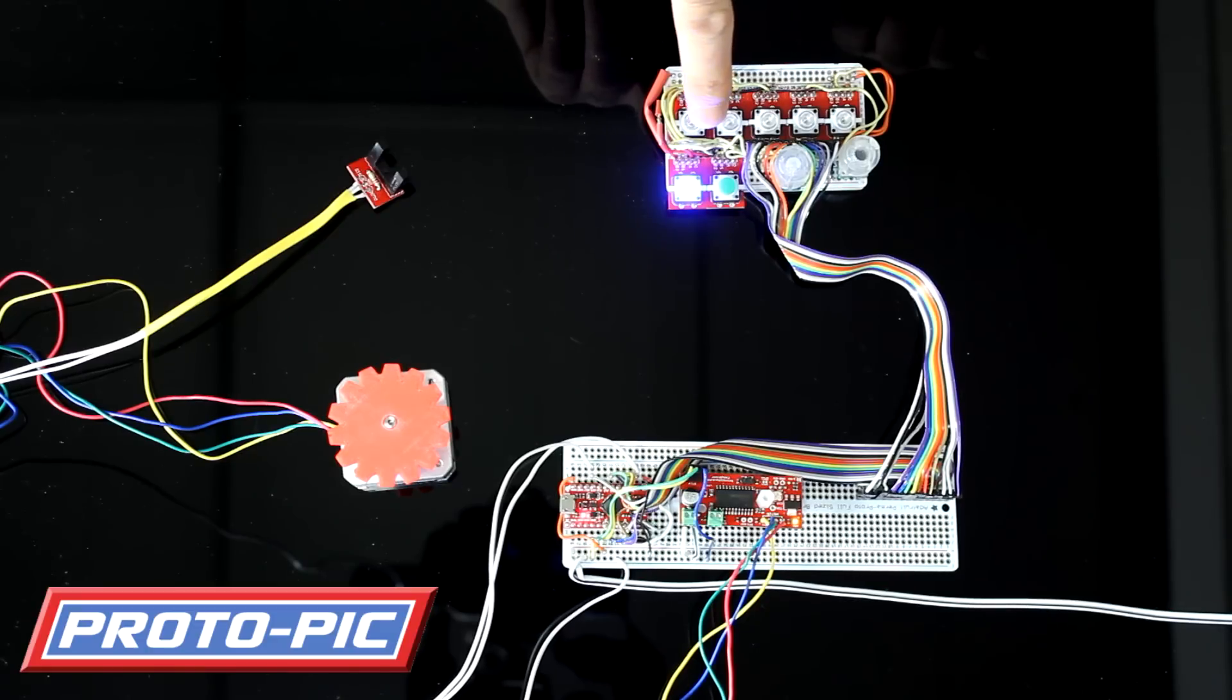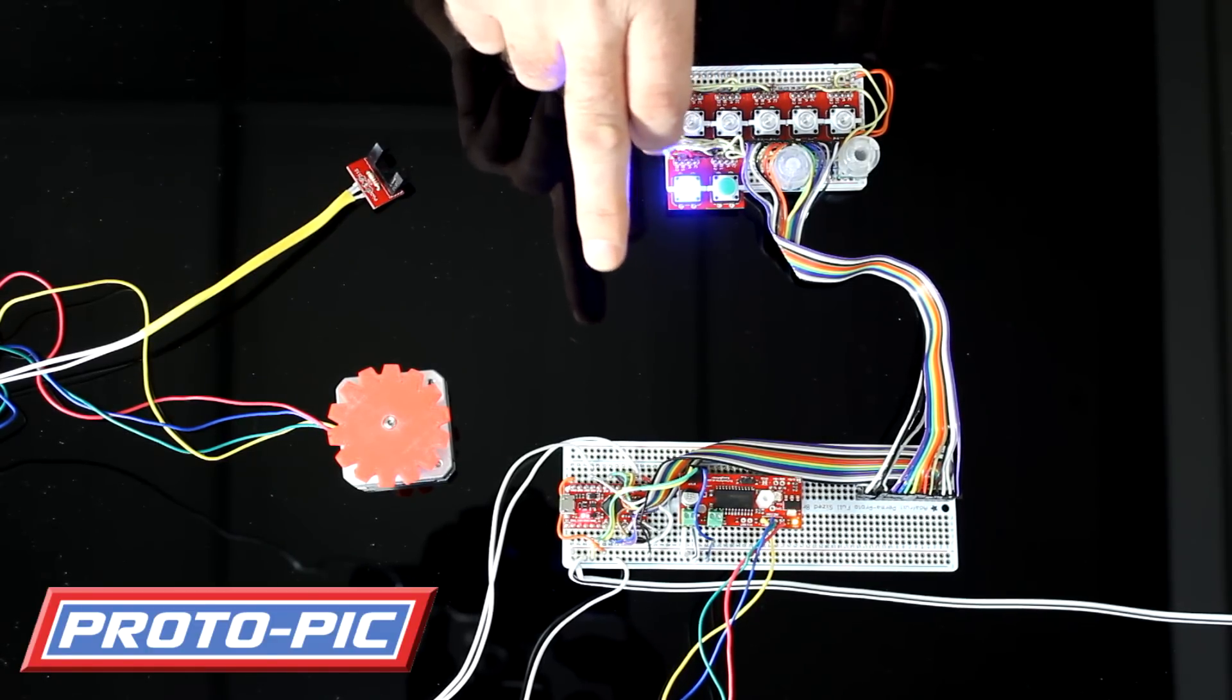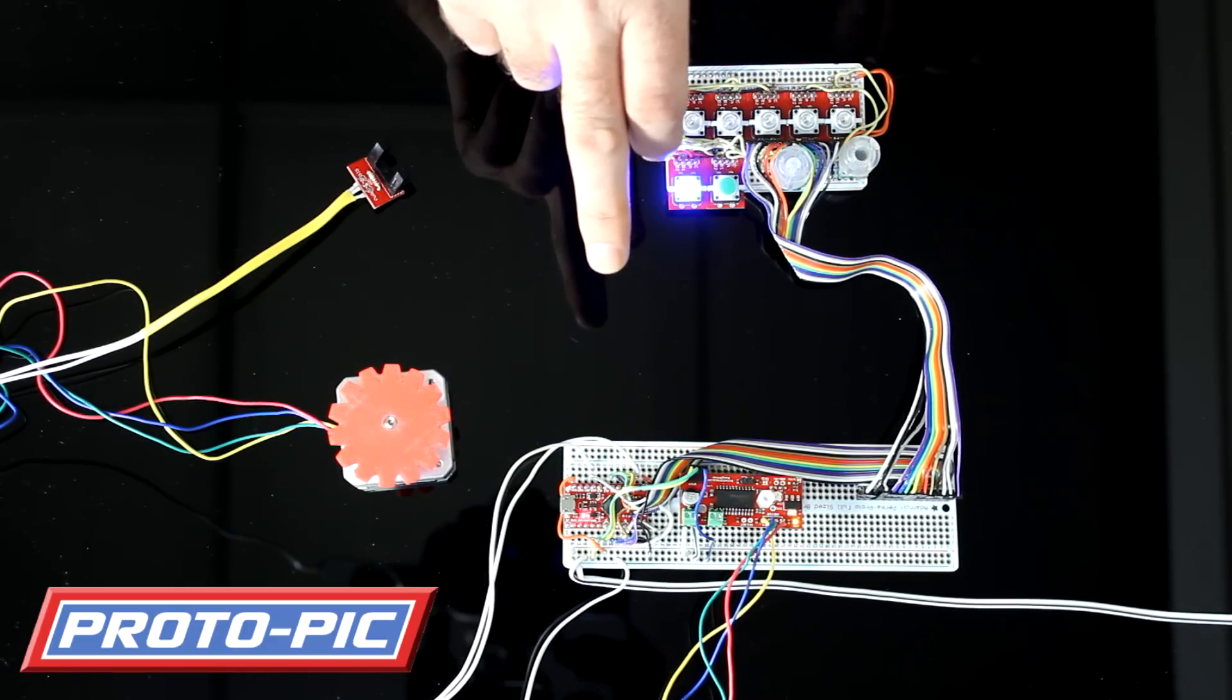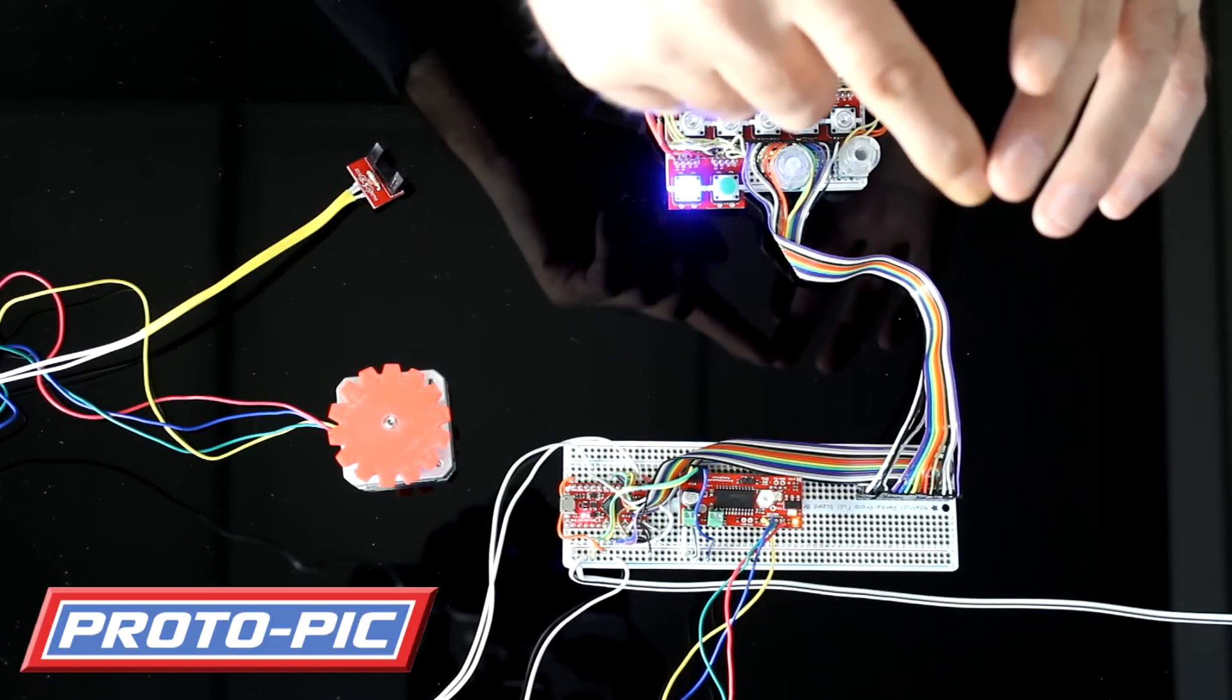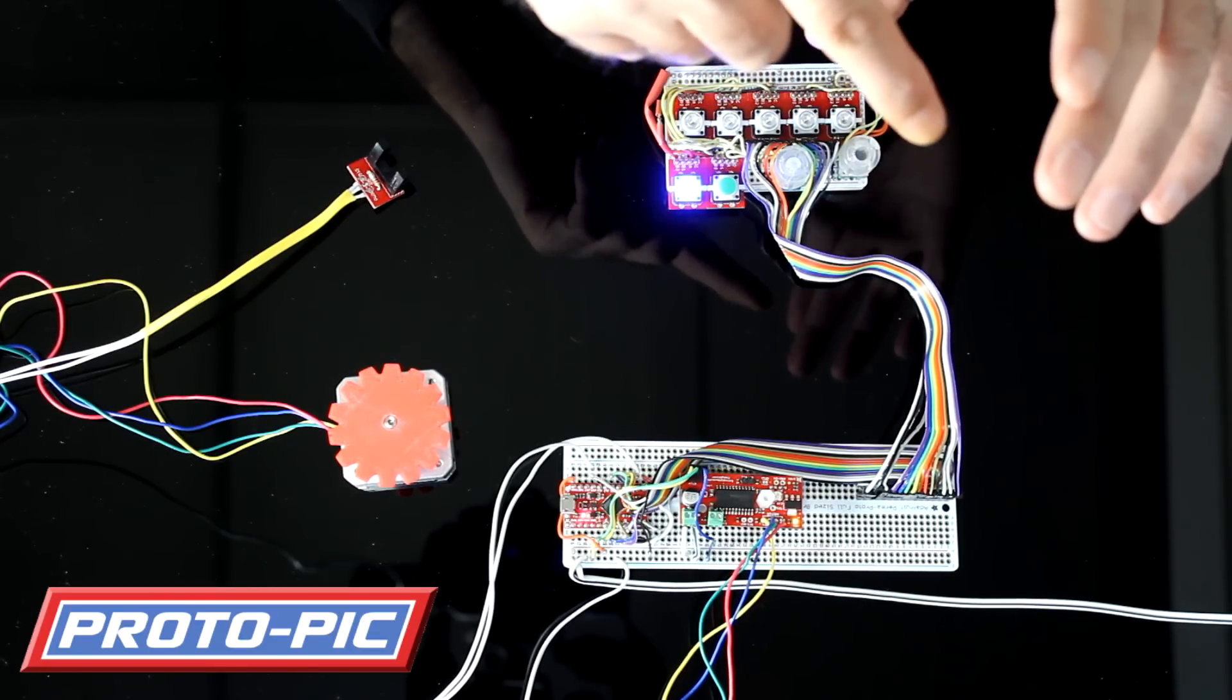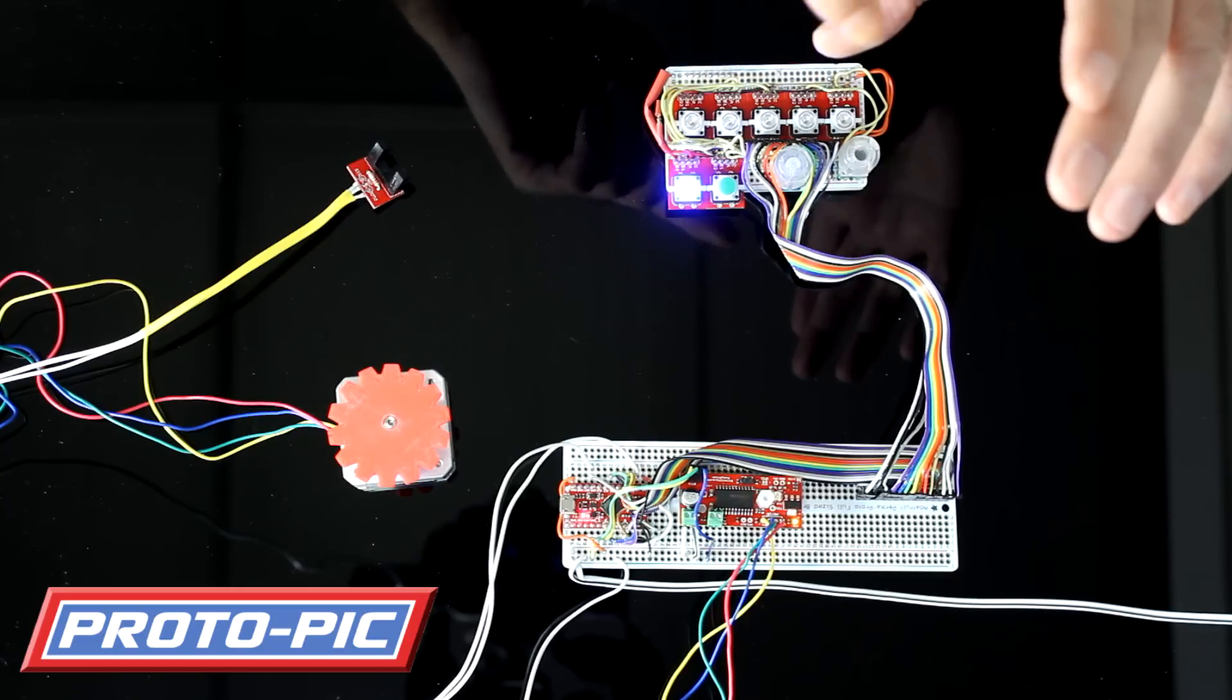So what we've done is using one analog input port we've created a resistor ladder network so what you can do with that you've got five volts you've got ground and you've got I think we used 10k resistors so we've got all our 10k resistors across here across each button.